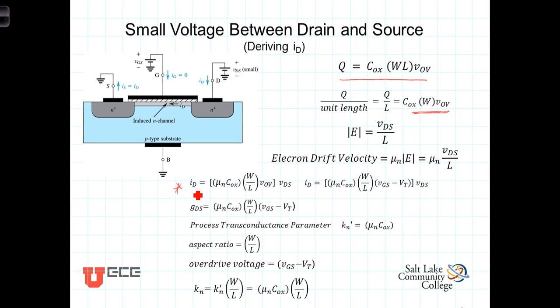You'll notice we've got I is equal to something times VDS. We're going to define this something to be the conductance of the channel. Conductance has the units of 1 over ohms. We'll talk about that in just a second. But by doing so, we have this expression, which is the conductance of the channel multiplied by VDS.